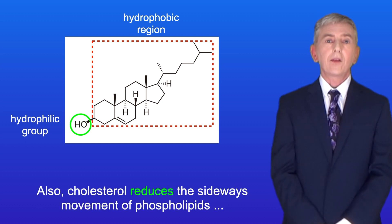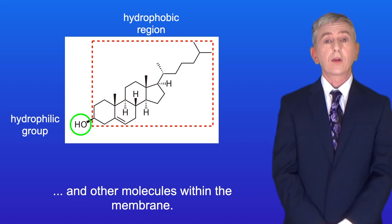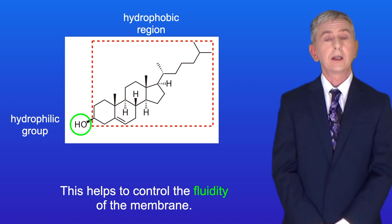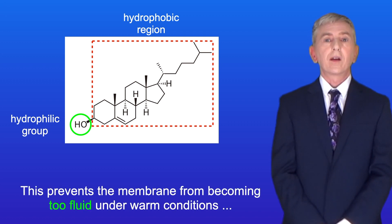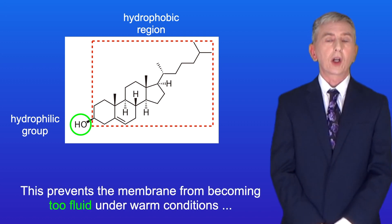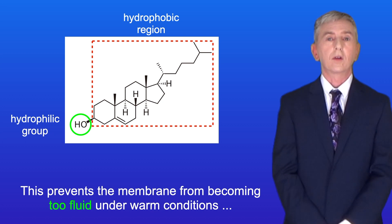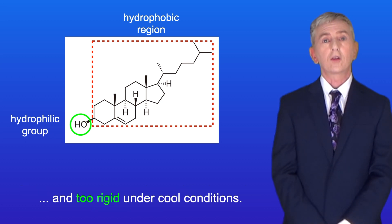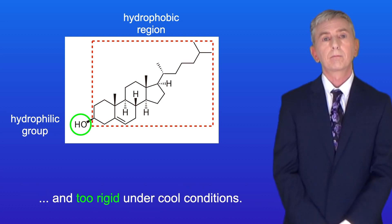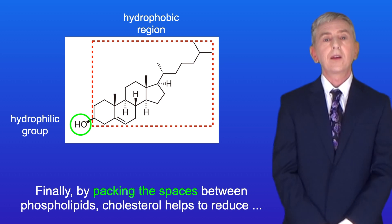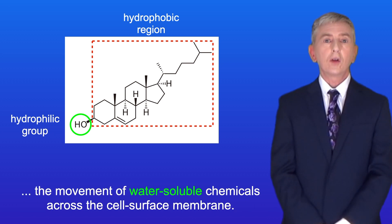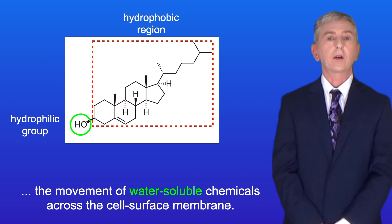Cholesterol also reduces the sideways movement of phospholipids and other molecules in the membrane, and this helps to control the fluidity of the membrane. This prevents the membrane from becoming too fluid under warm conditions and too rigid under cool conditions. Finally, by packing the spaces between phospholipids, cholesterol helps to reduce the movement of water-soluble chemicals across the cell surface membrane.